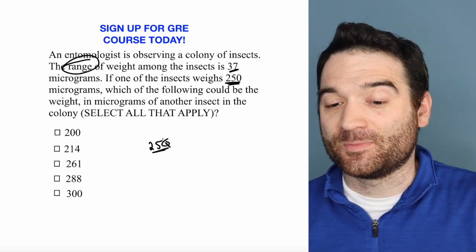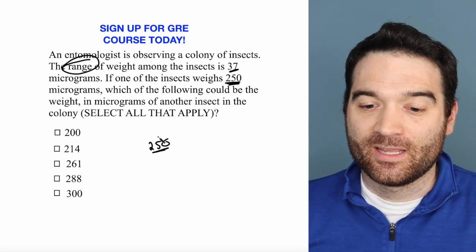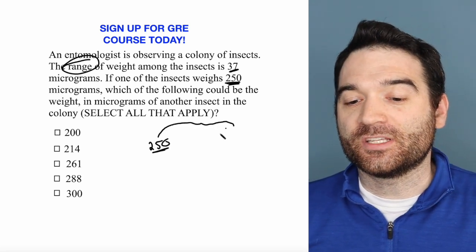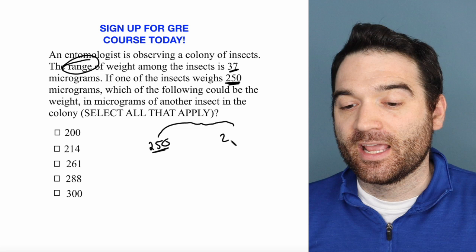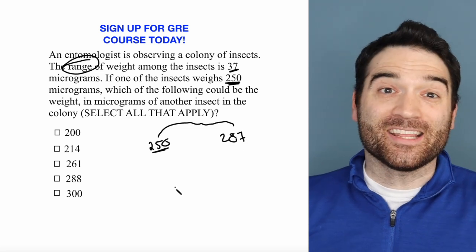So let's consider all the possibilities. Let's pretend that it's the smallest one. In that case, the range is 37, so add 37 to this and the biggest one would be 287.